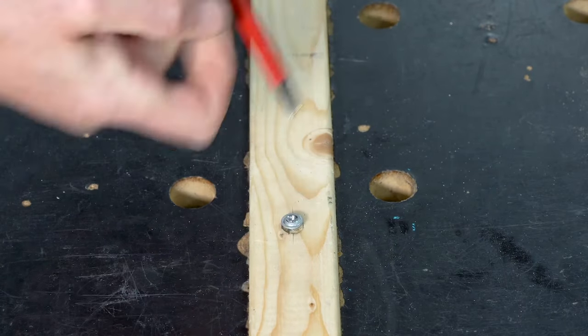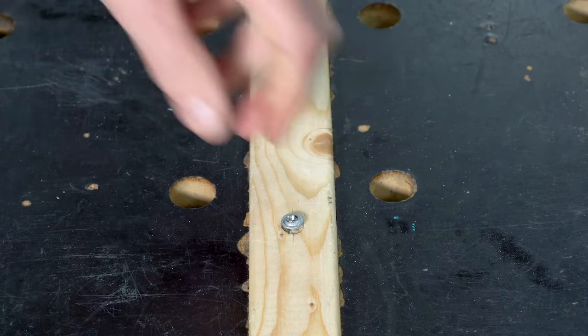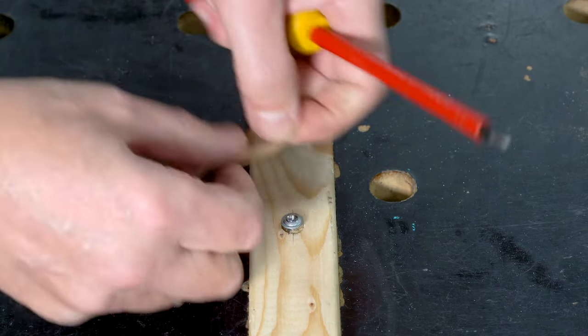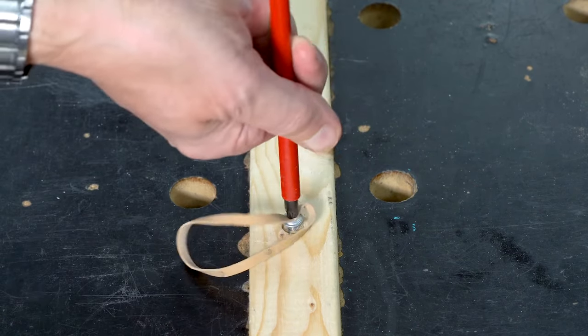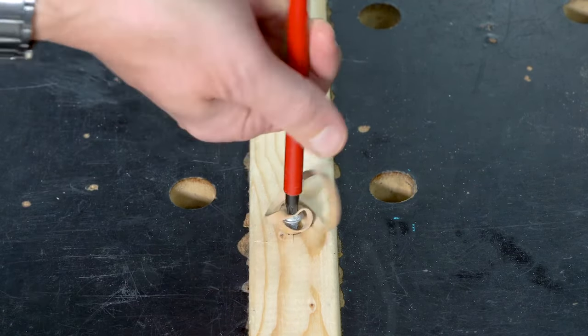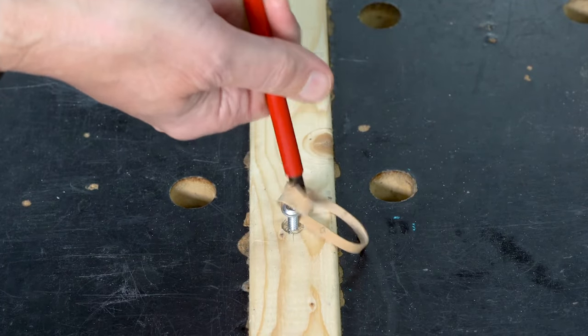There we go. Still can't quite do it with that, but now we could get some pliers on that and carry on winding it. I might as well just use the elastic band though - it's really helping to get that screw out.